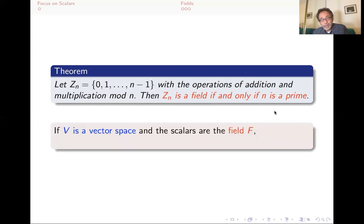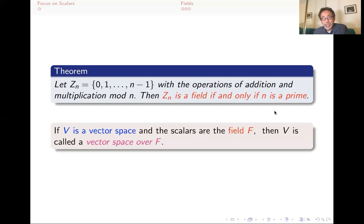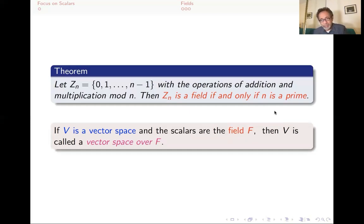If you have a vector space and the scalars are from a field F, then you say that your vector space is over F. This explains why we kept saying 'V is a vector space over R' — we meant that the scalars are real numbers. If you use a different set of scalars, you have to specify that. For a first-time reader, that's a red herring — you should just think about scalars as real numbers.